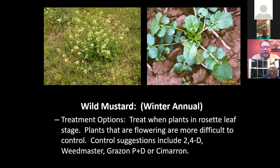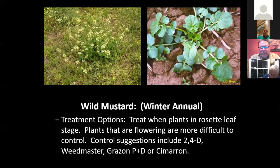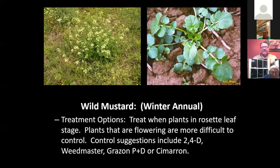Wild mustard or turnips — we see those in the early spring. They're cool season annuals that reproduce themselves from a seed, which means we can bush hog them to control them. A challenge is that a lot of times the blooms form low on the plant, so it's hard to get your bush hog down low enough to control those blooms without interfering with your forage production. 2,4-D, Weedmaster, and Grazon P+D work for them.